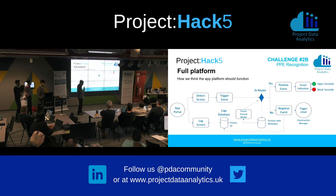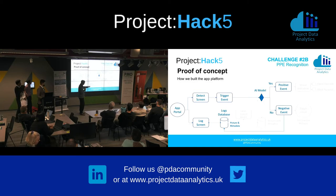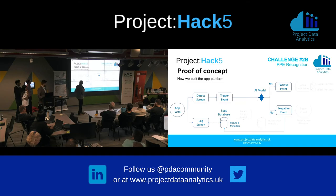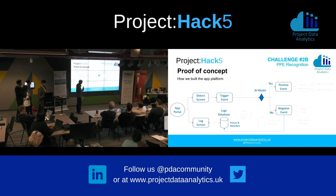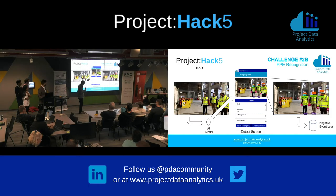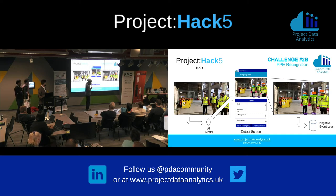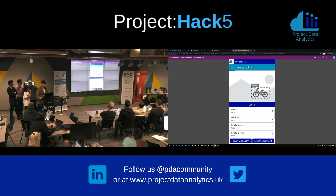It would also log back into a database where people could see in the log screen what the picture was like and what they were wearing. Those pictures would also go back into the main database for training of the AI model. The app has two screens: the log screen is a text screen, and the detect screen will take a picture and show the original image and the detected image with the five items showing whether they are actually being worn or not.